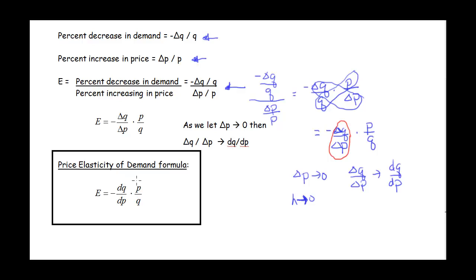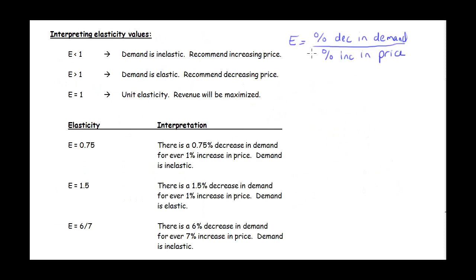So here's our formula for the price elasticity of demand — put this on your note card. Elasticity is the percent decrease in demand over the percent increase in price. If this fraction is less than one, the percent decrease in demand is smaller than the percent increase in price, and our demand is inelastic — increasing the price was a good idea. If our elasticity is greater than one, the percent decrease in demand is bigger than the percent increase in price, so the demand is elastic.